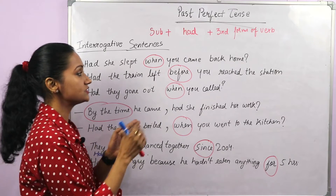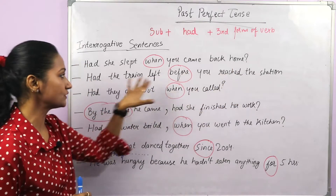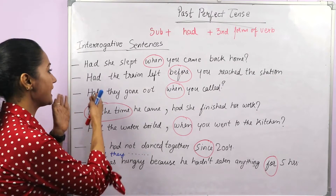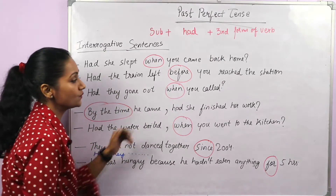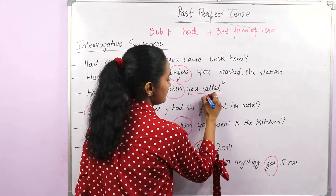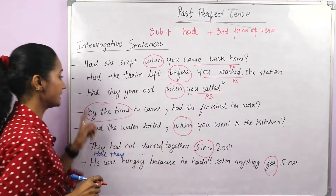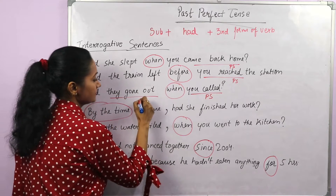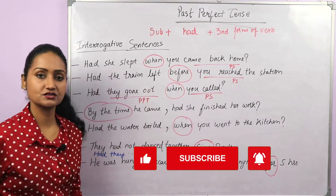Next: 'Had the train left before you reached the station?' When you reached the station — past simple — and before that, had the train left? Structure: 'had' plus subject. Next: 'Had they gone out when you called?' 'When you called' is past simple — subject plus second form. Before that, 'had they gone out?' — past perfect, the earlier action. So 'had' plus subject plus third form of the verb.